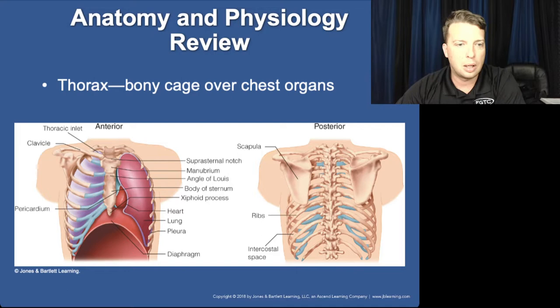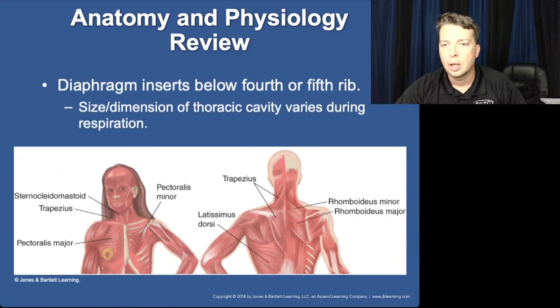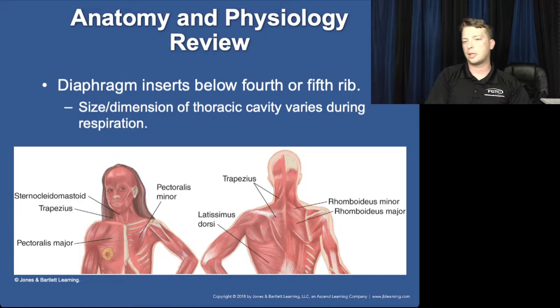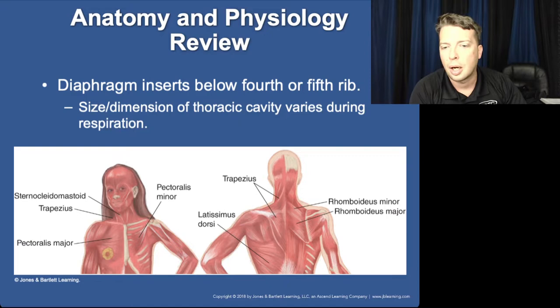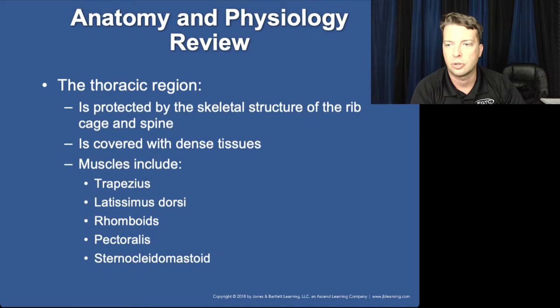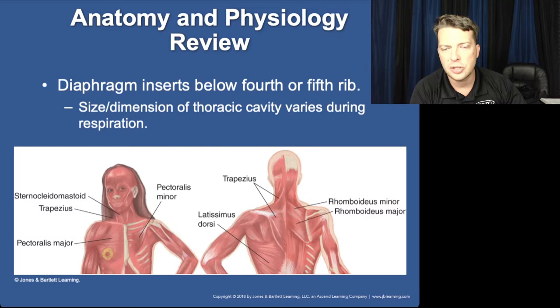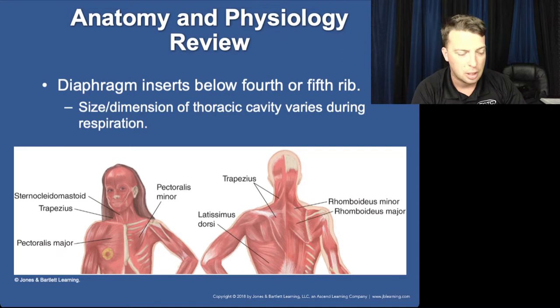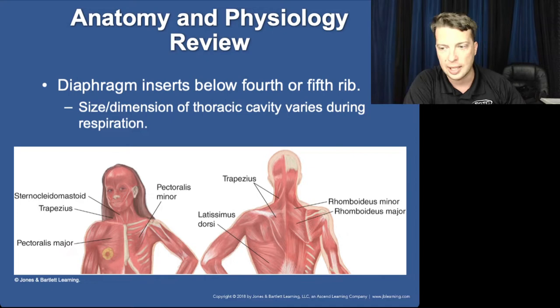Around the thorax you have multiple layers of muscle. The pectoralis minor lies underneath the pectoralis major. The back also has many layers of muscle running in different directions, which is why listening to lung sounds can be challenging with larger or more muscular patients, and why minor movements or pulls can cause significant pain or injury.